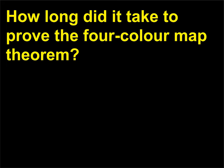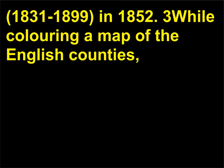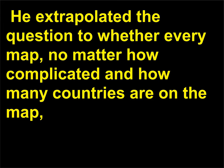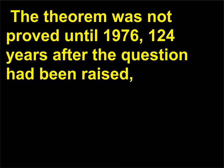How long did it take to prove the four-color map theorem? The four-color map problem was first posed by Francis Guthrie, 1831 to 1899, in 1852, while coloring a map of the English counties. Guthrie discovered he could do it with only four colors and no two adjacent counties would be the same color. He extrapolated the question to whether every map, no matter how complicated and how many countries are on it, could be colored using only four colors with no two adjacent countries being the same color. The theorem was not proved until 1976, 124 years after the question had been raised.